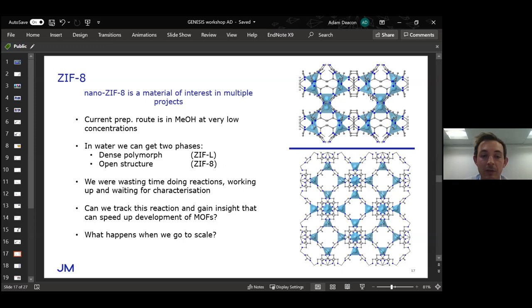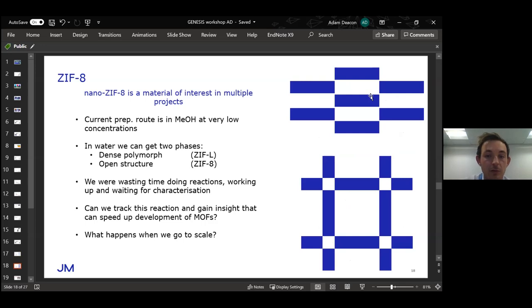However, we have seen in certain circumstances that we sometimes produce a different material, very similar—a dense polymorph of ZIF-8 which is ZIF-L. It's a very similar material, just not porous or very less porous. It's a squashed version of ZIF-8 as represented by this figure on the side here.